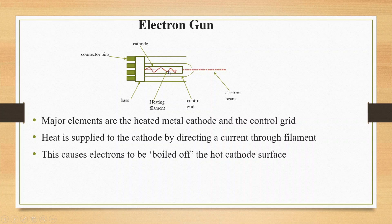The cathode is heated using a filament. We heat this filament, the filament heats the cathode, and then the cathode produces electrons.